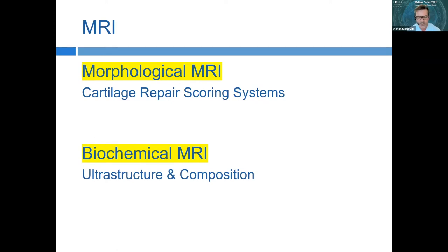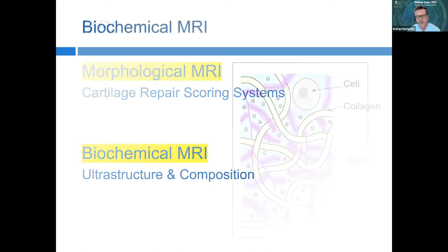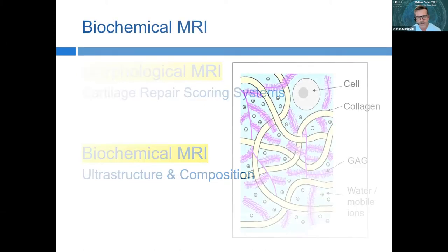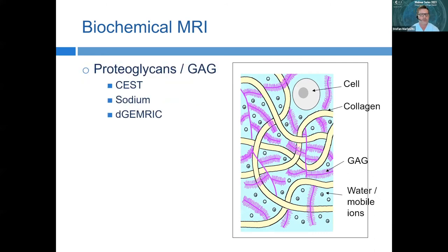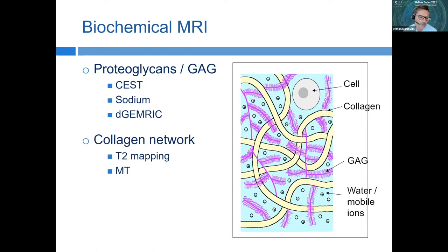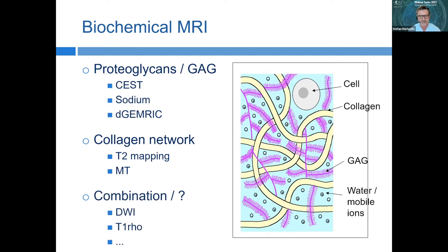Biochemical MRI is very important for understanding the ultrastructure and composition of tissue — we can see information about proteoglycans, collagen, and use combinations of different techniques to gain insight into the biochemical composition of cartilage.